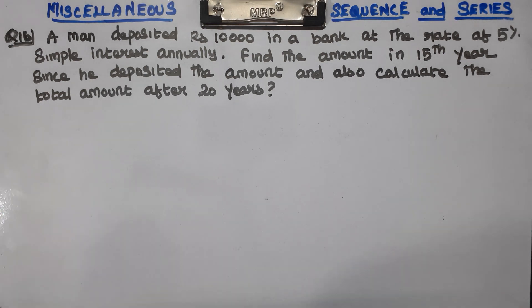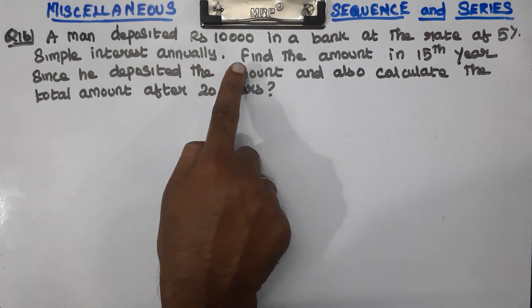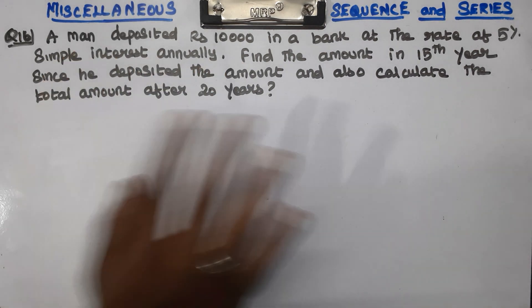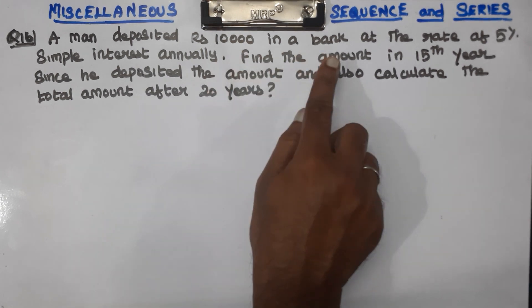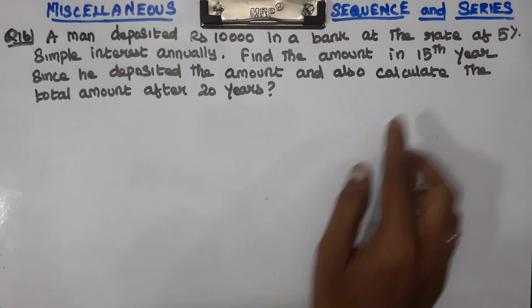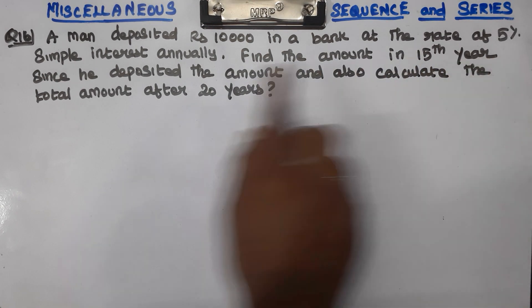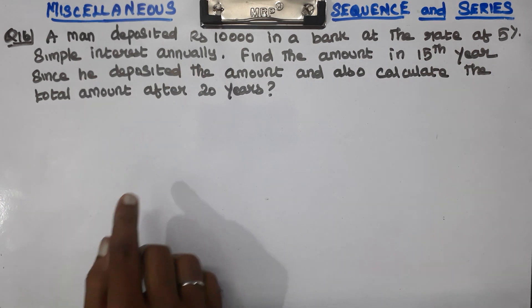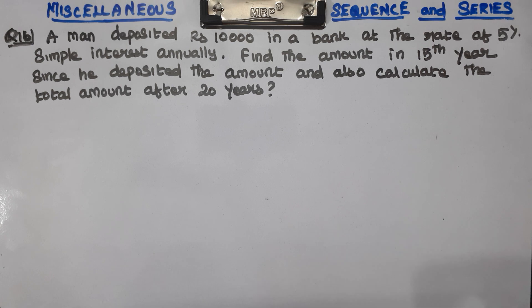Question number 16: a man deposited 10,000 rupees in a bank at the rate of 5% simple interest annually per year.